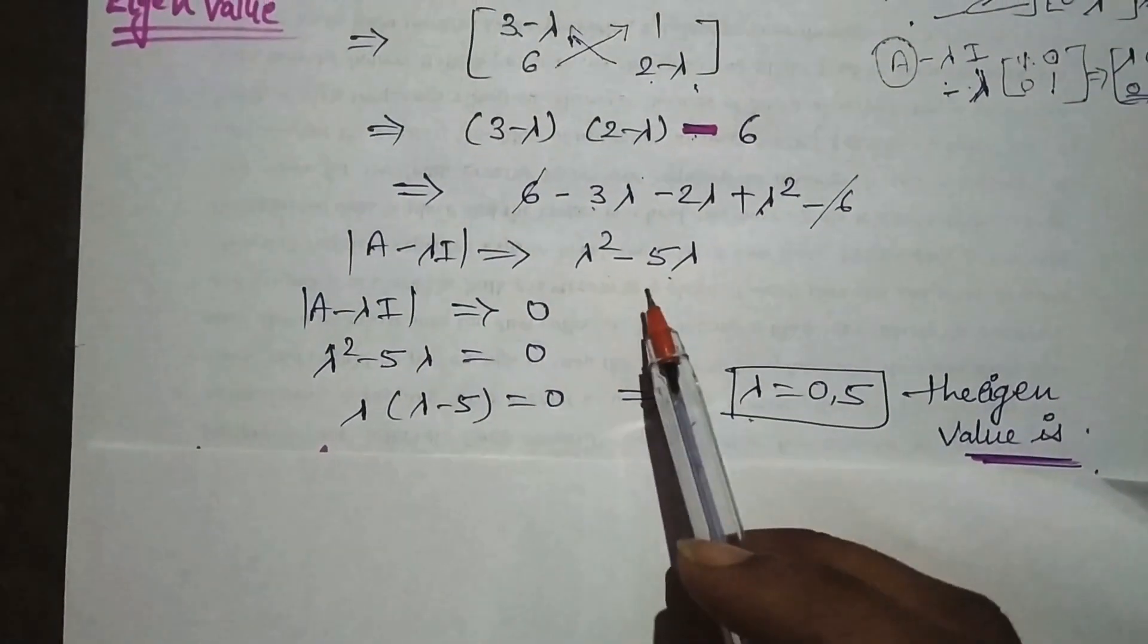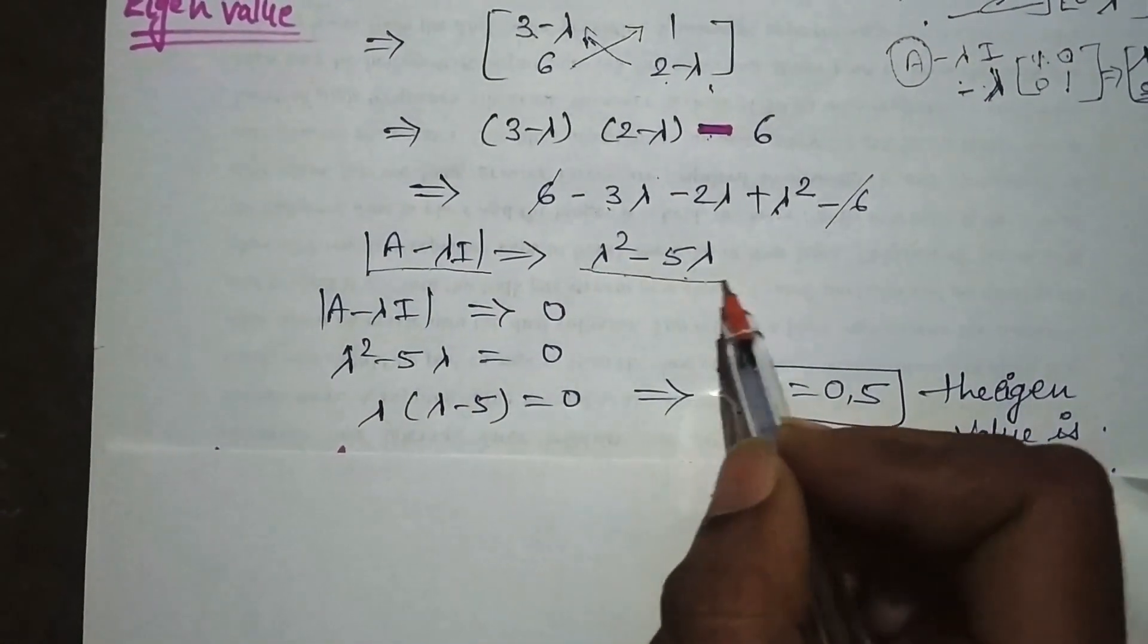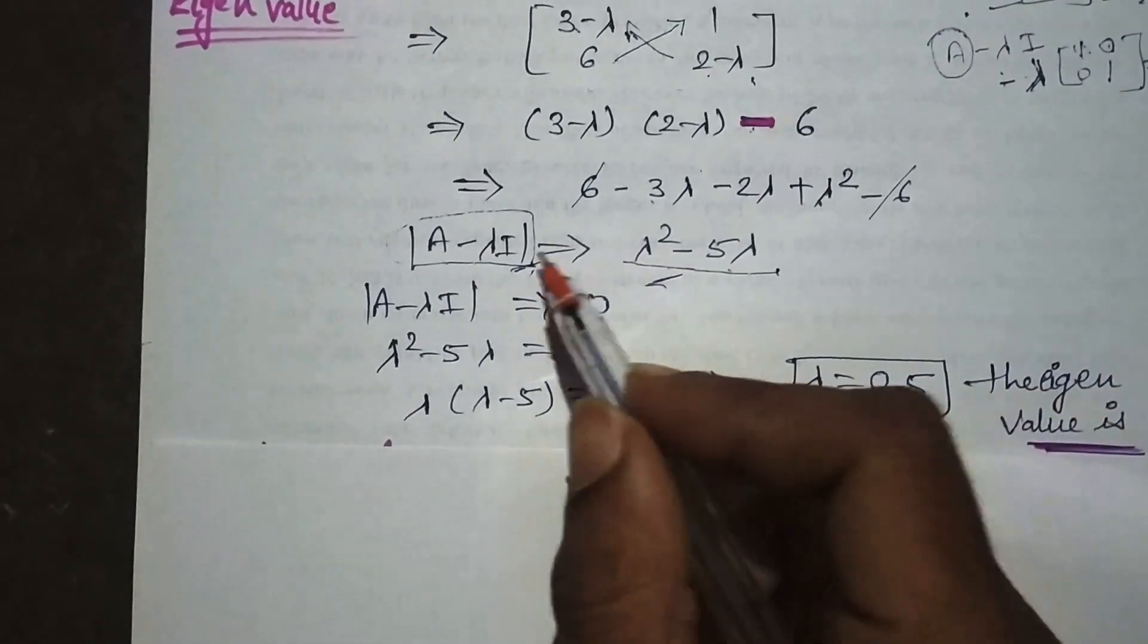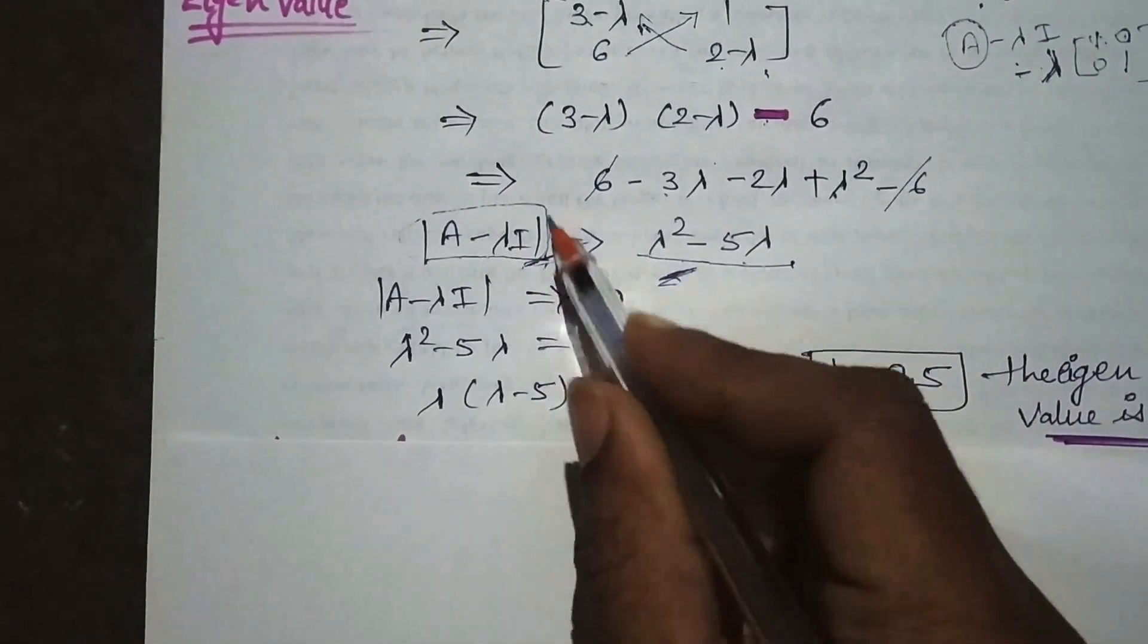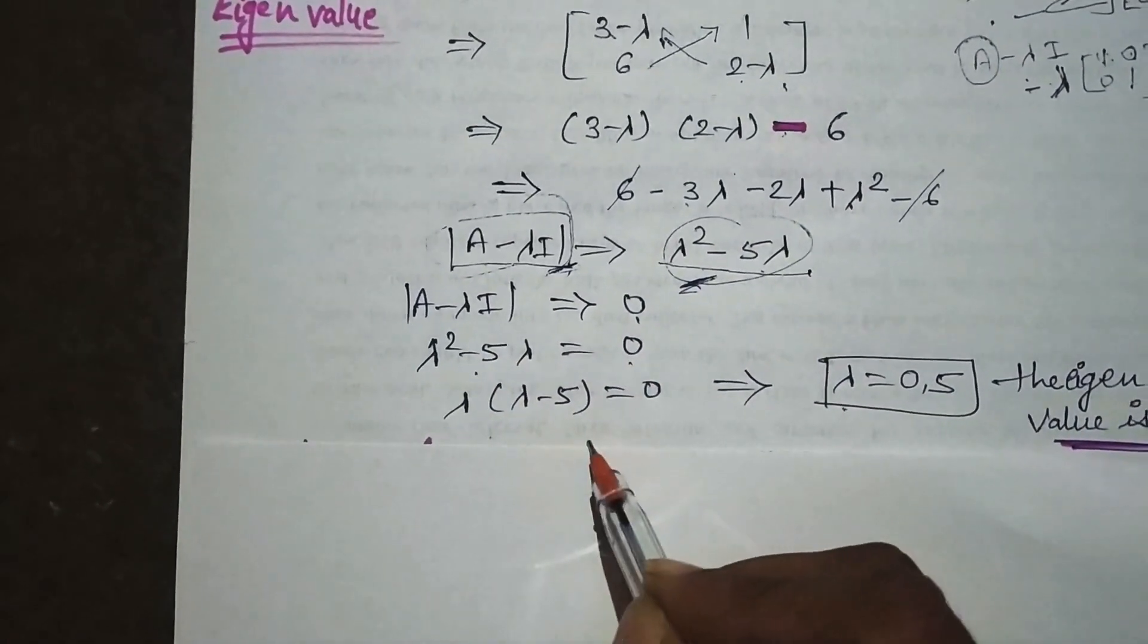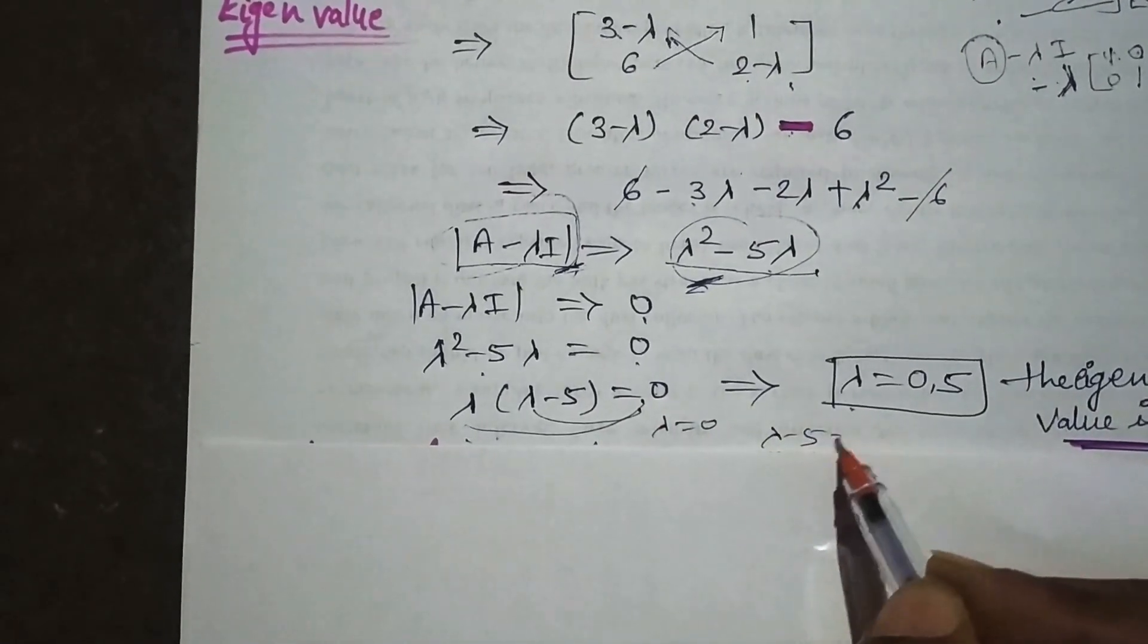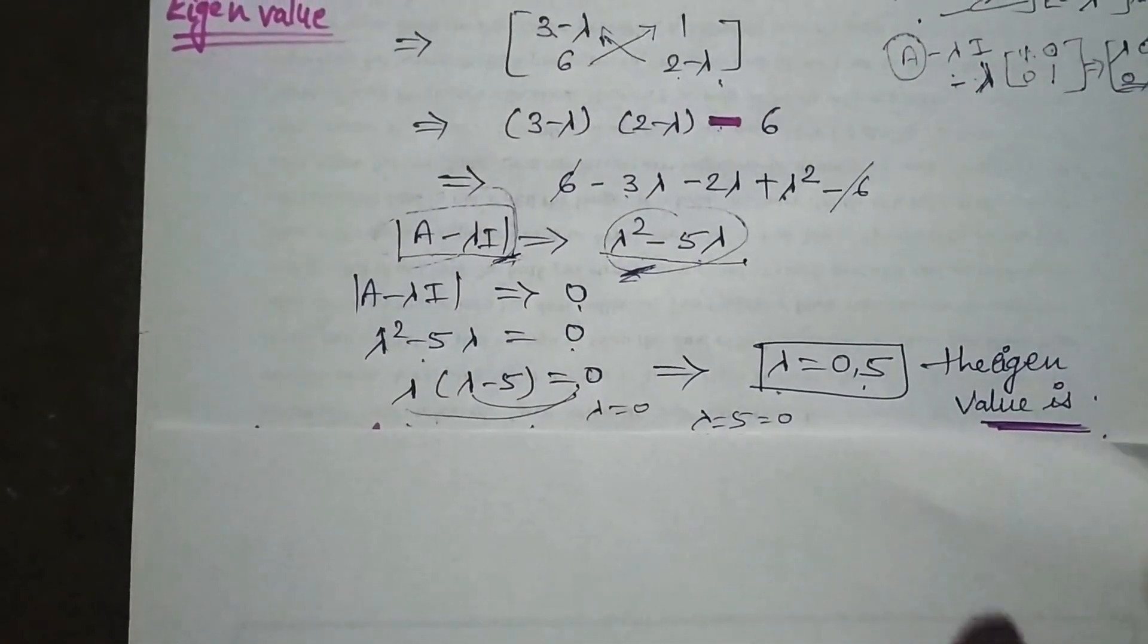This will be minus five and this will be lambda squared. When we equate this to zero, we get λ² - 5λ = 0. Taking lambda common and solving: λ = 0 and λ - 5 = 0, so λ = 5. These zero and five are your eigenvalues.